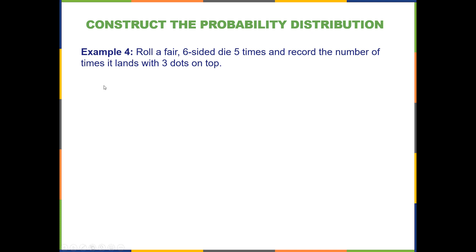And each roll is independent, meaning that if I get a three on the first roll, it doesn't make it any more or less likely that I would get a three on the second roll, and so on. And also, every single roll, I have the same probability of getting a three. It's always going to be one out of six. So because of that, this is a binomial random variable.